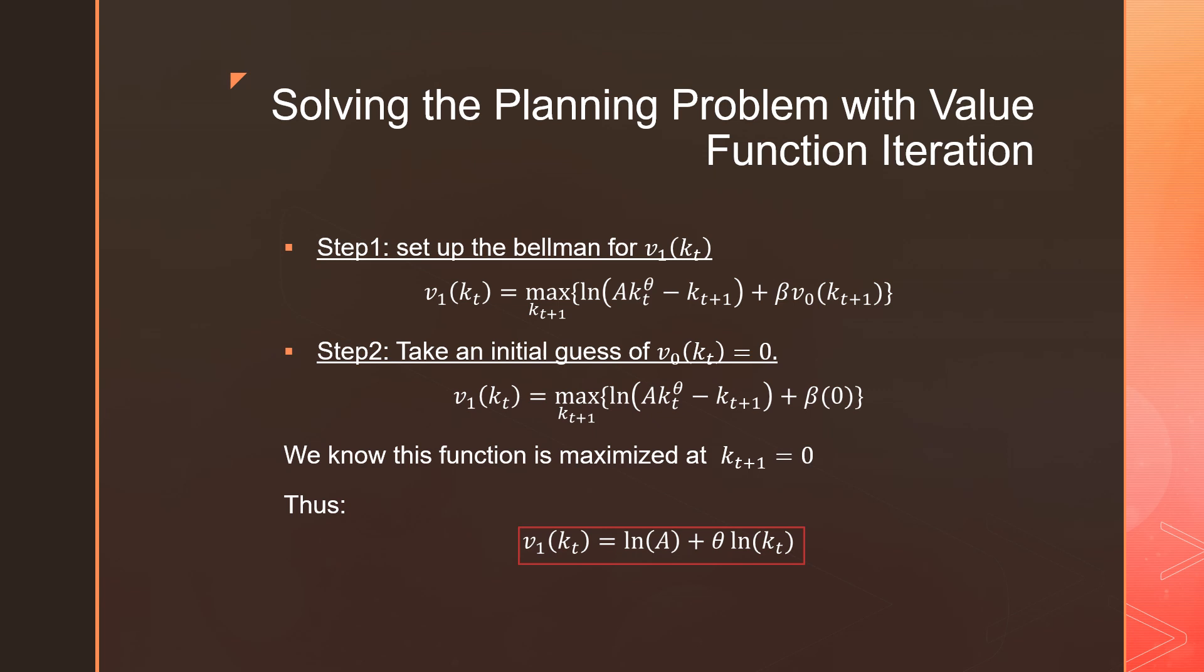This isn't something you do with calculus. This is just common sense. So our first iteration of our value function, where it is maximized, is ln(a) + θ ln(kₜ₊₁).